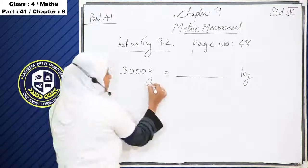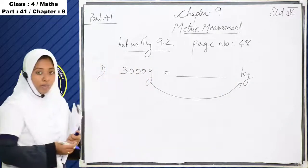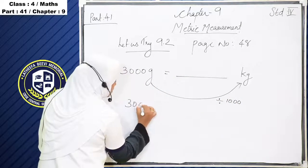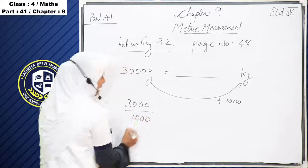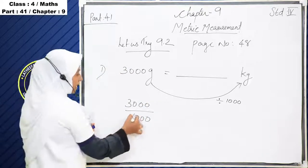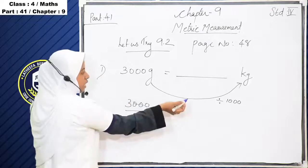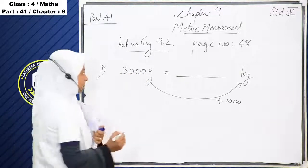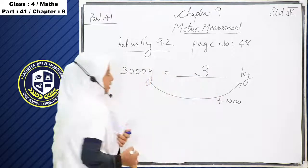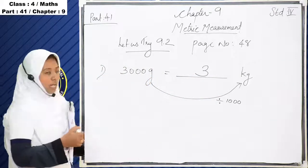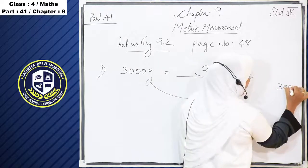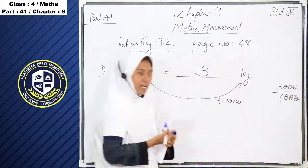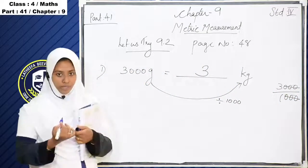So if we convert gram into kilogram, we divide by 1000. So 3000 divided by 1000. The three zeros cancel, and we get 3. So 3000 gram is equal to 3 kilogram.